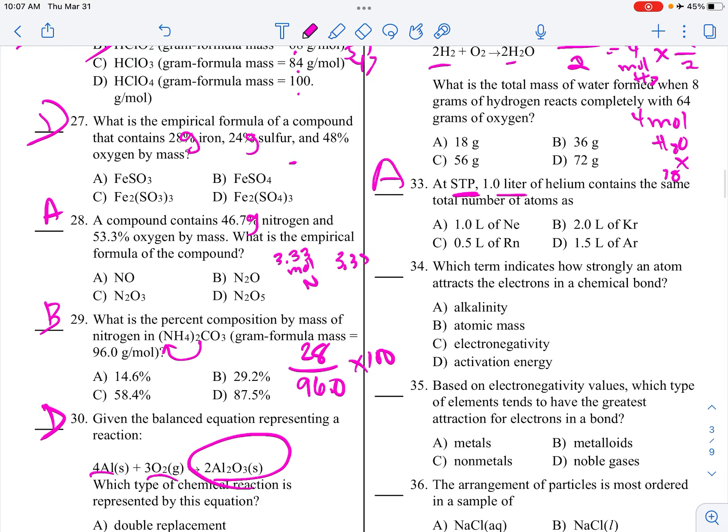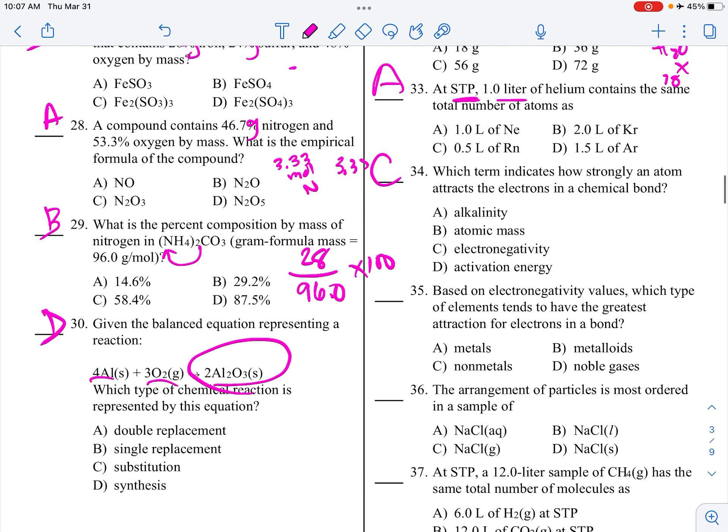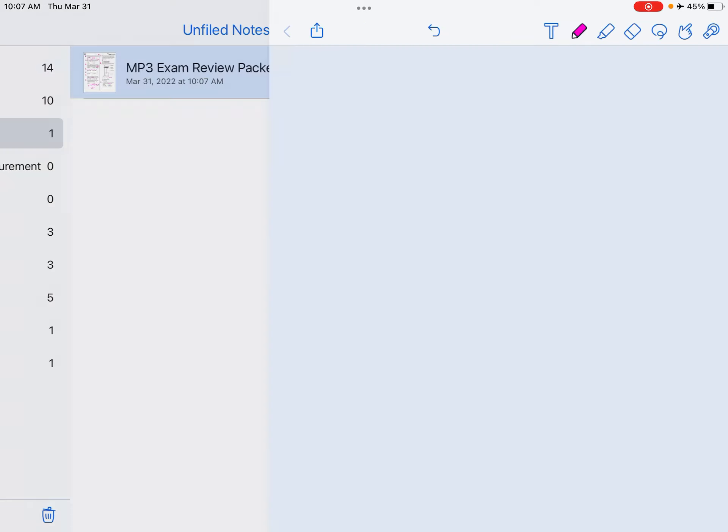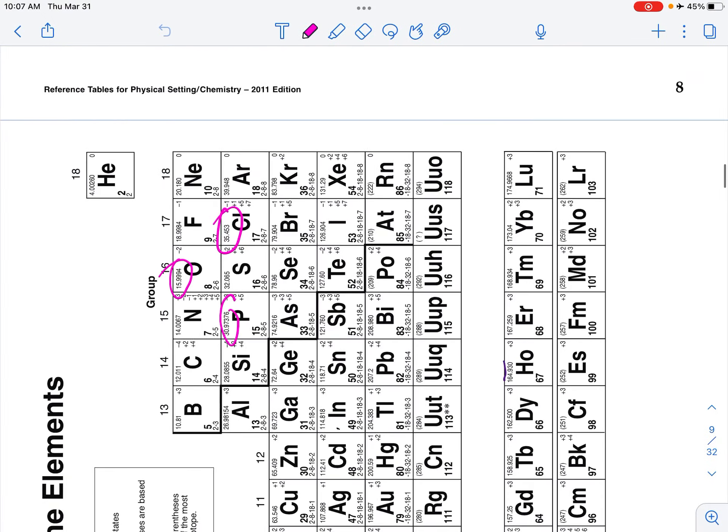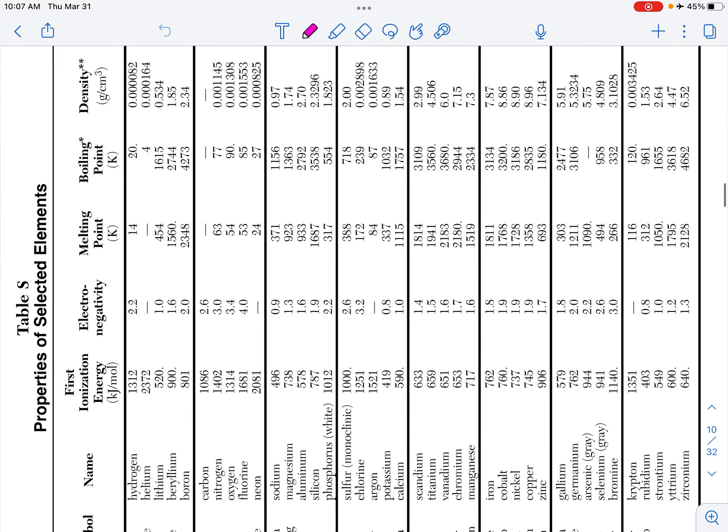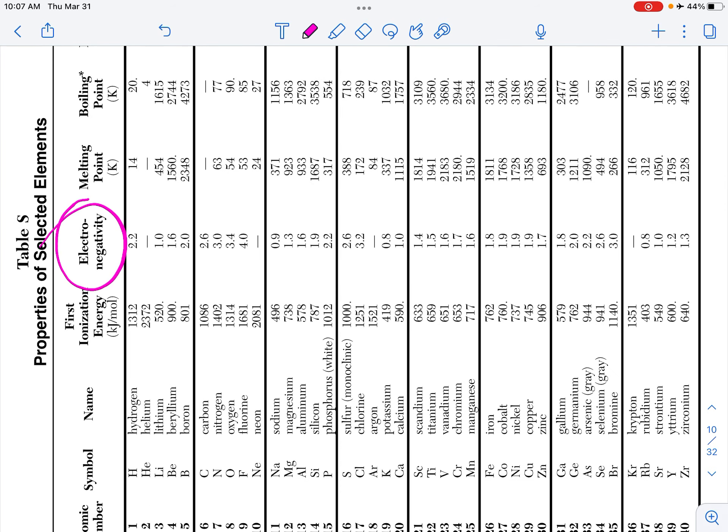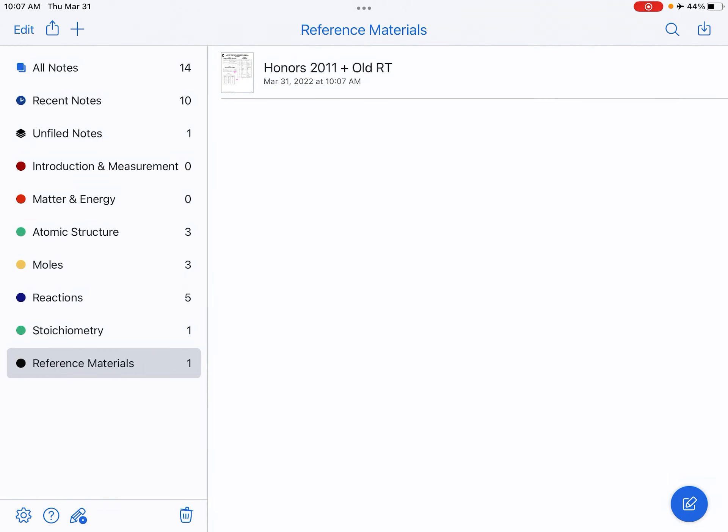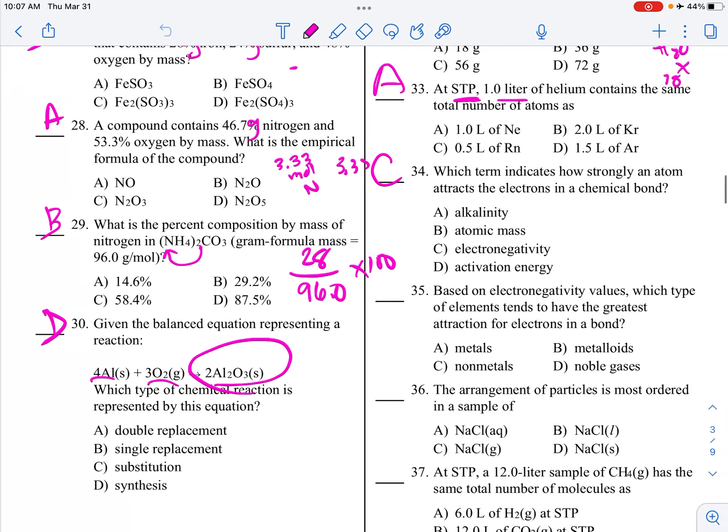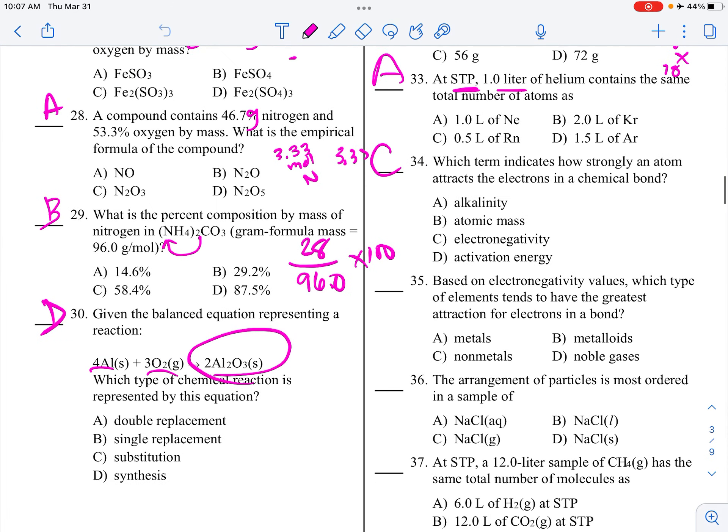How strongly an atom attracts to the electrons? It's called electronegativity. Based on electronegativity values, which has the greatest attraction for electrons in a bond? So, just take a look. Take a look at table S, if you didn't know. And you've got, again, it's to the side, but all the electronegativities here, and if you just, you know, take a couple metals, a couple non-metals, whatever. Noble gases will have none, so then, if I did look at it, it would be non-metals.